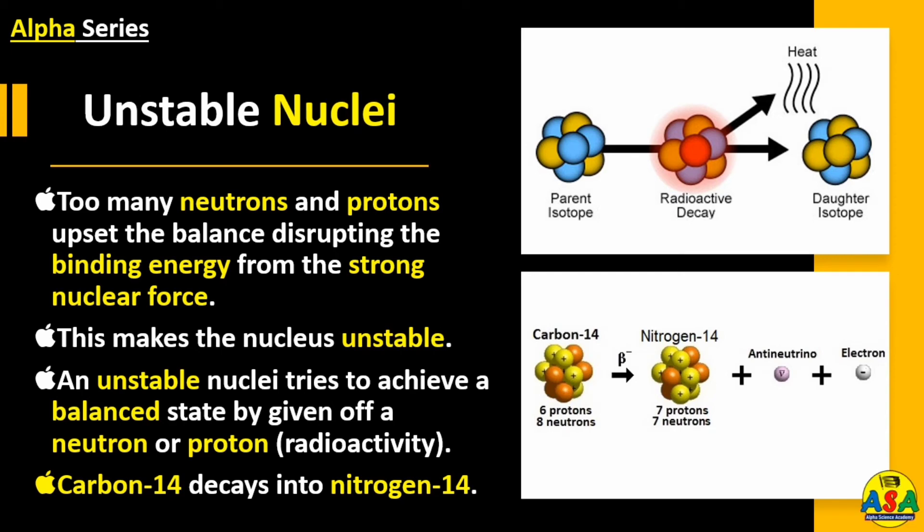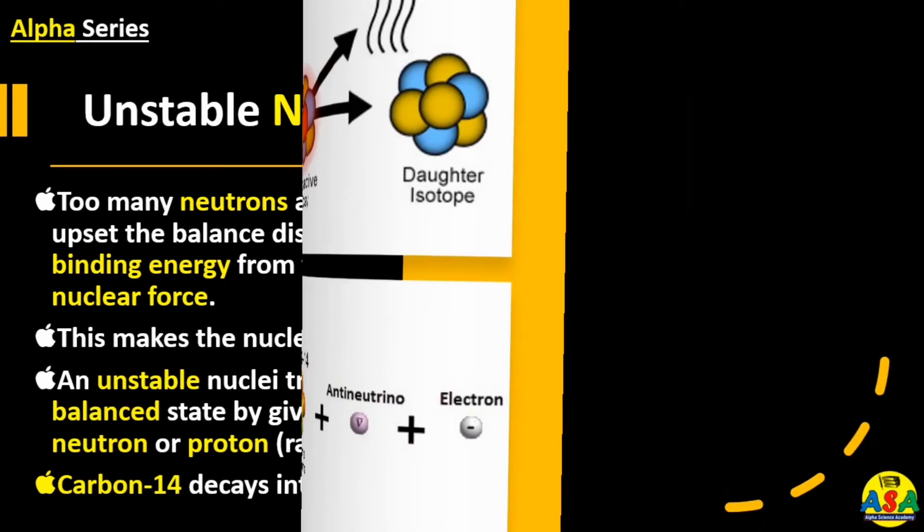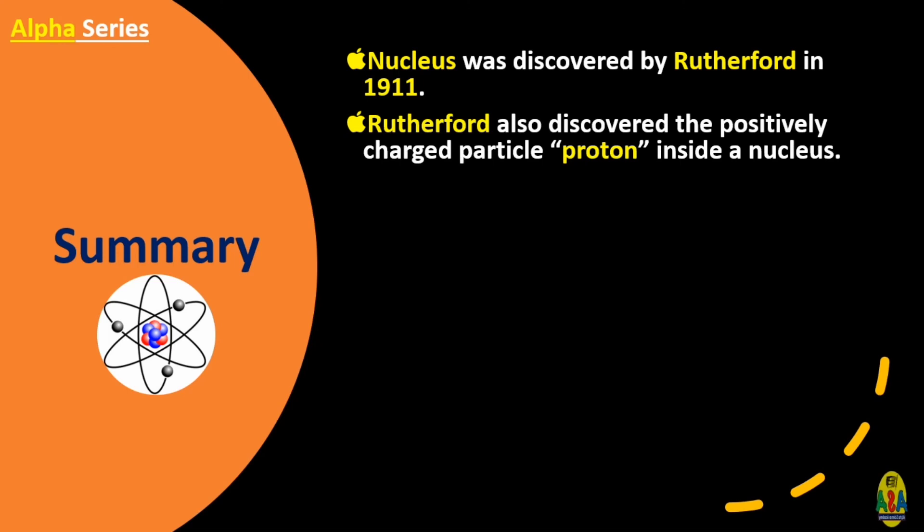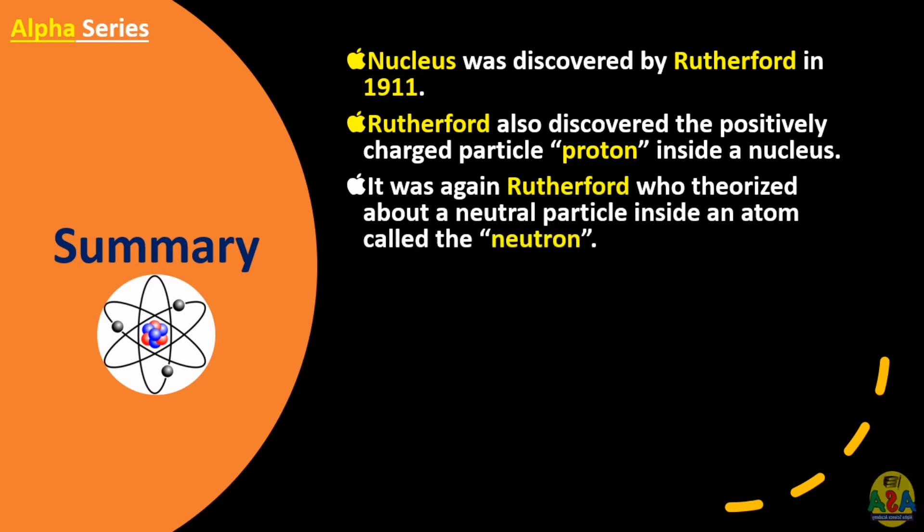Let's have the summary. Nucleus was discovered by Rutherford in 1911. Rutherford also discovered the positively charged particle proton inside a nucleus. It was again Rutherford who theorized about a neutral particle inside an atom called the neutron.